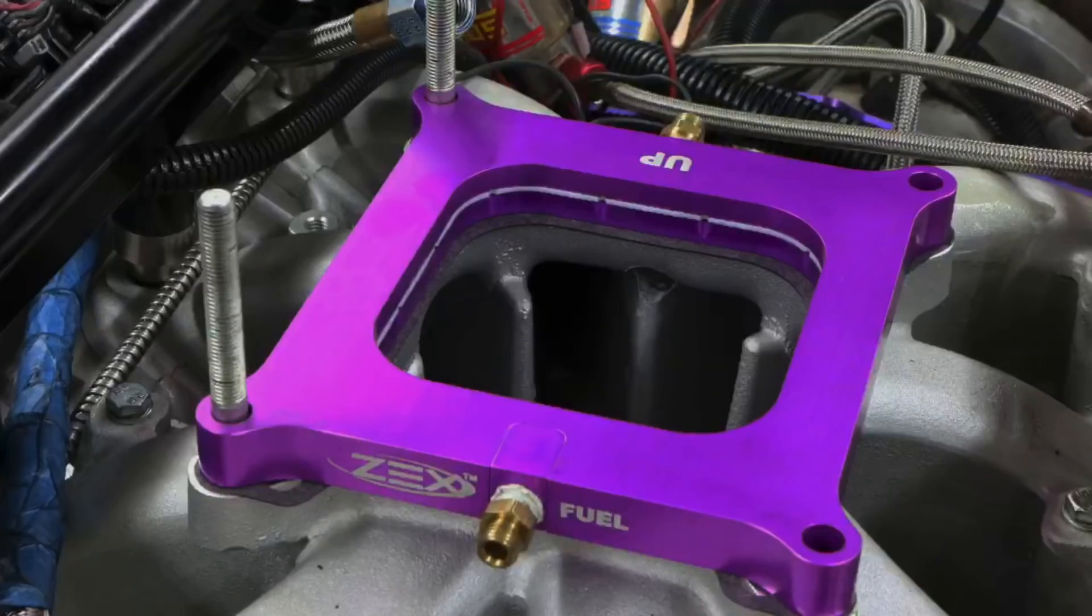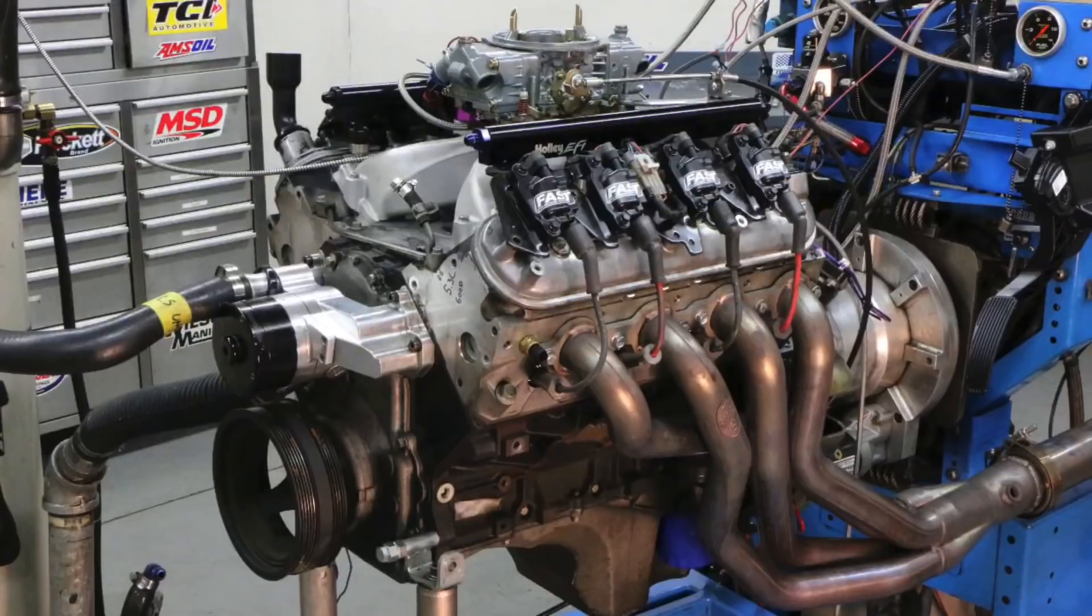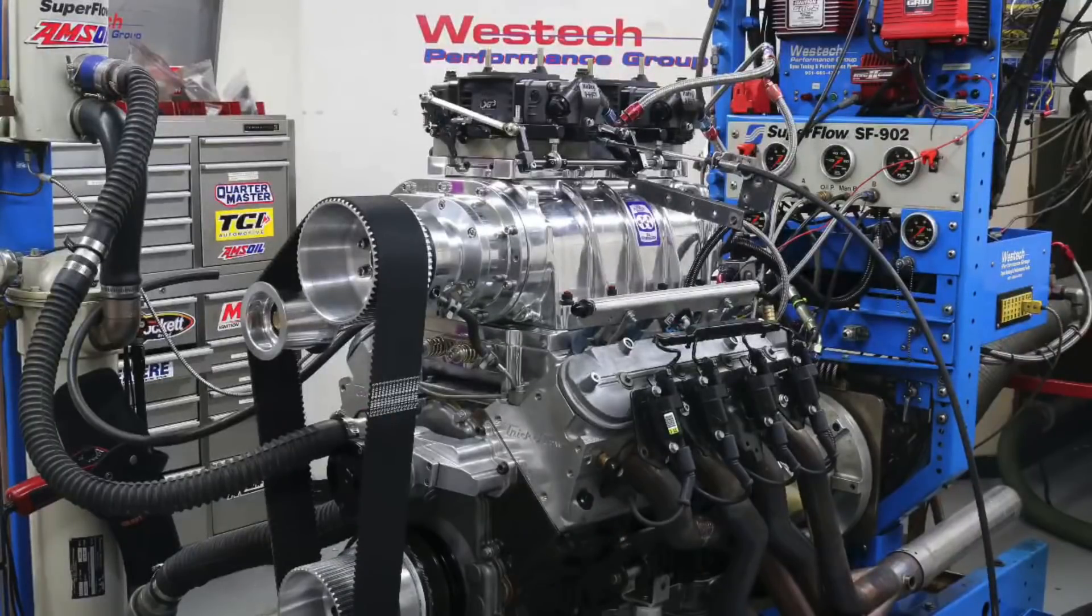Okay guys, I think we proved once again power adders are awesome, especially on an LS motor. Now our first test, nitrous on a junkyard cammed and carbureted 5.3, we gained almost 300 horsepower. I think I mentioned previously in the video that I did ring gap on this motor. I did not, and it just goes to show you what you can get away with sometimes without gapping the rings.